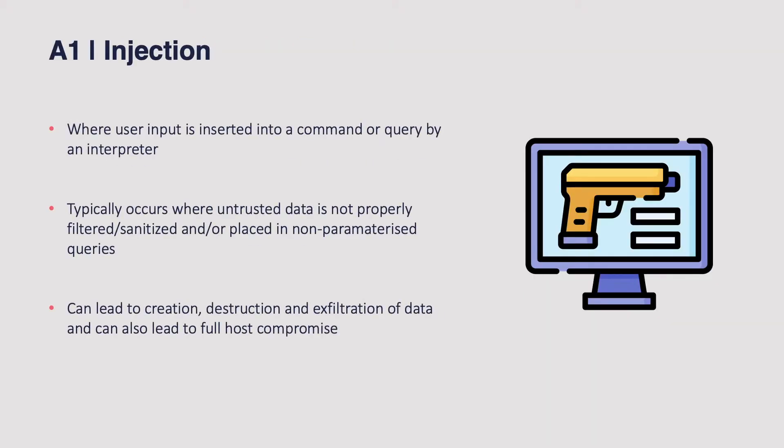So let's take a brief look at each of the Top 10, starting with injection. These security risks are in order of criticality, so based on the research, injection was found to be the greatest threat to web application security. At a basic level, injection is where untrusted user input — data provided by a user — is able to escape the context it was intended for and execute or manipulate an application's code, commands, or queries.